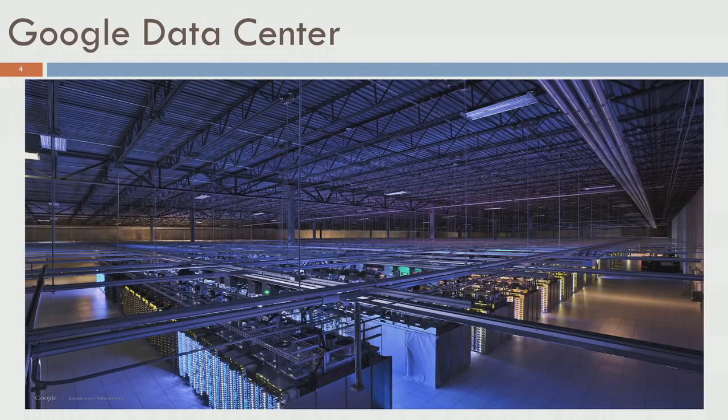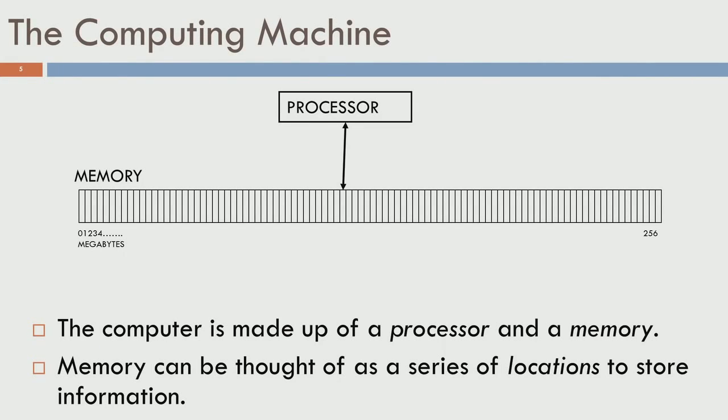This requires enormous organization of equipment, power systems, cooling systems and so forth. But all of this is basically a computing machine. Whether ENIAC, Pentium 4, or these data centers, they're all built of computing machines and the basic abstraction is what we see here.